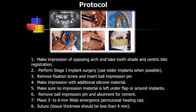The steps for the second alternative are: first, make an impression of the opposing arch, take the tooth shade, and centric bite registration. Then perform the stage 1 implant surgery. Remove the fixation screw and insert the ball impression pin, and make an impression with addition silicone material. One important precaution is to make sure no impression material is left under the flap or around the implant, as acrylic can become trapped between the flap or around the implants.